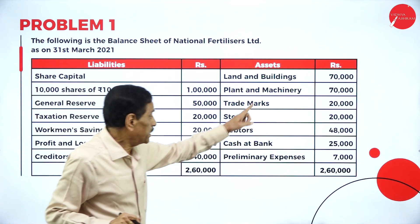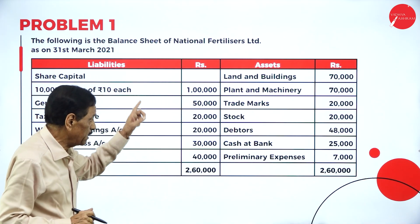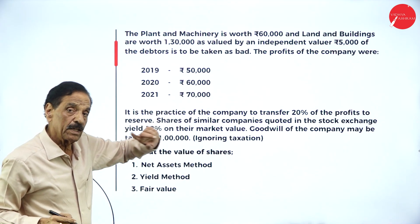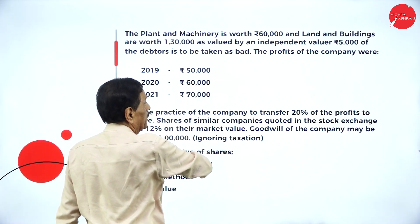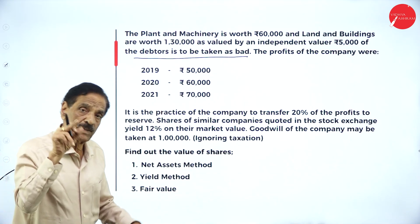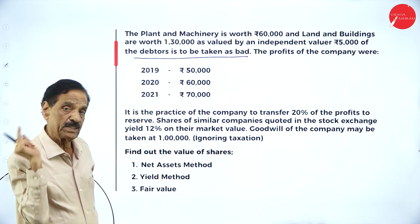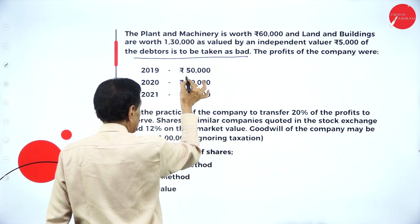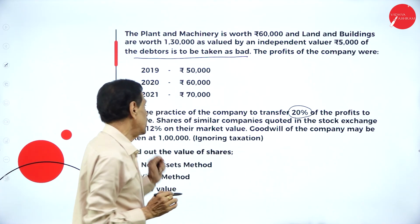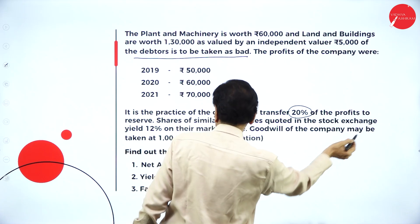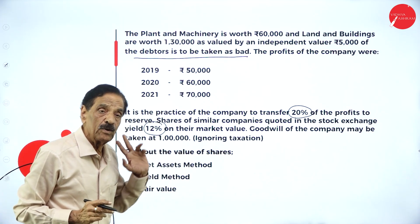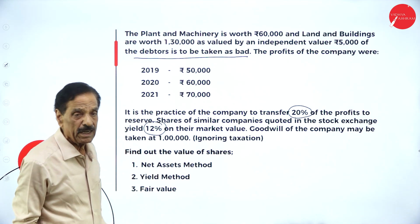In the problem, we are given book values of assets and liabilities. The plant and machinery is now worth rupees 60,000 — this is the market value. Building is valued at one lakh thirty thousand by an independent valuer. Out of the debtors data, five thousand is bad debt. The profits of the company were fifty thousand, sixty thousand, and seventy thousand. The company transfers twenty percent of profit to reserve. Shares of similar companies quoted on the stock exchange yield twelve percent as a normal rate of return. Goodwill may be taken as one lakh. Ignore taxes. Find the value of shares under the net asset method, yield method, and fair value method.